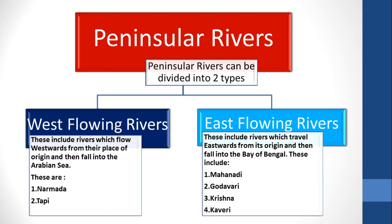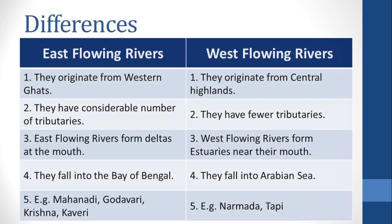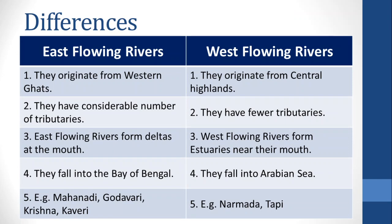Now look at the differences between East Flowing Rivers and West Flowing Rivers. East Flowing Rivers originate from the Western Ghats, while West Flowing Rivers originate from the Central Highlands. East Flowing Rivers have a considerable number of tributaries, while West Flowing Rivers have fewer tributaries.